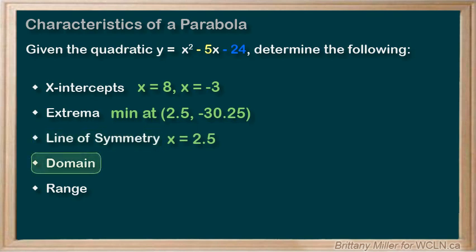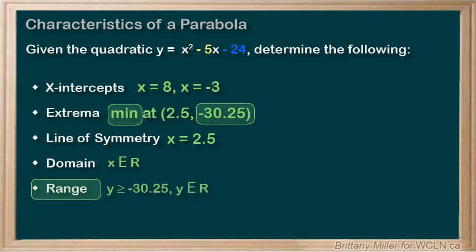The domain of a quadratic is always all real numbers, and we know that we have a minimum y value of -30.25, so the range will be all real numbers greater than or equal to -30.25.